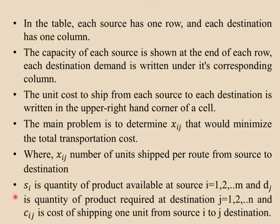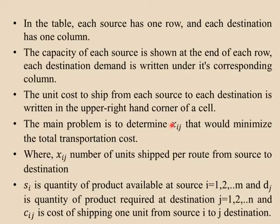In the general form, si (where i equals 1 to m) is the quantity of product available at each source. dj is the quantity of product required at each destination. cij is the cost of shipping one unit from source i to destination j. We need to find the optimal xij — the quantity to transport from each source to each destination — to minimize the total transportation cost.